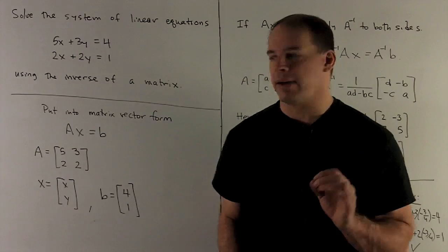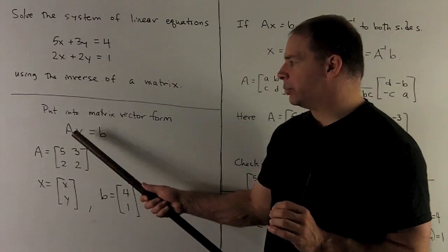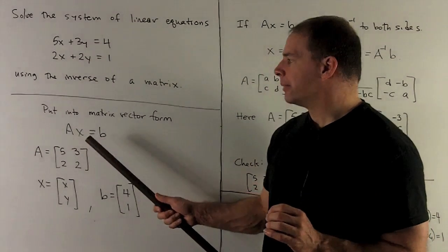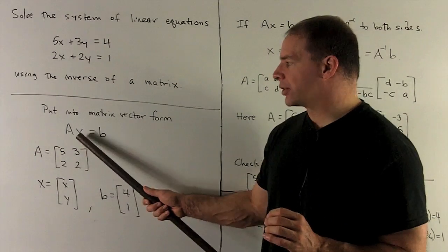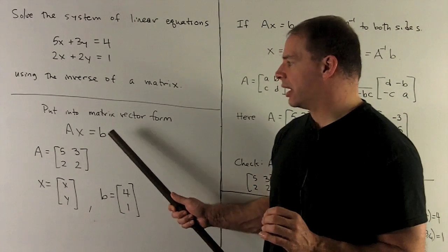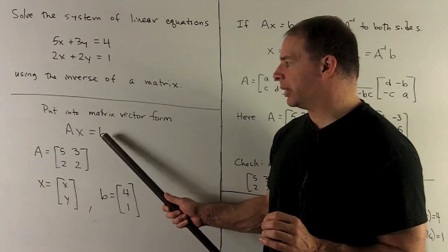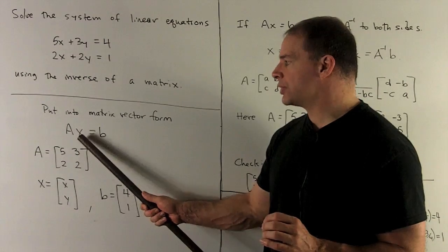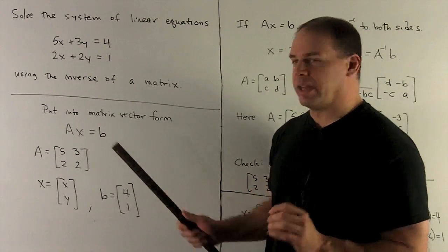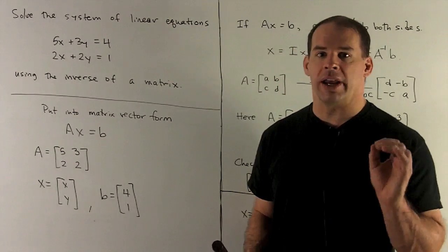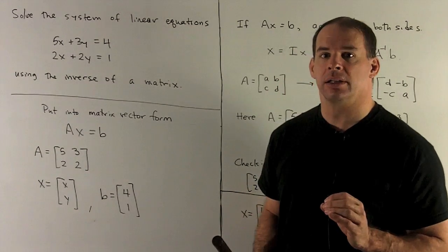We'll have a 2 by 2 matrix A, a 2-vector x, and another 2-vector b. So x will be our unknowns, and b will be the items on the right hand side.